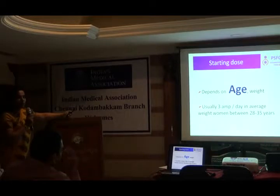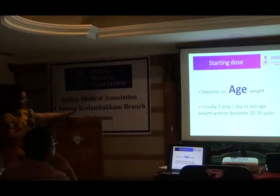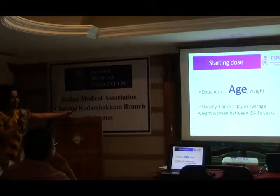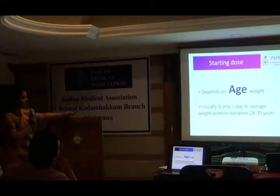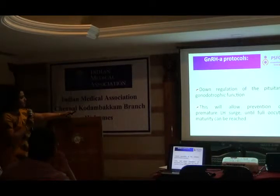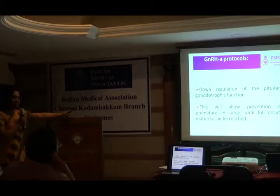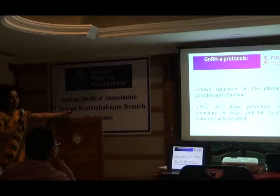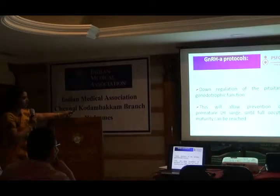The starting dose — how much gonadotropin to give — depends upon the age. Age is a very important factor in poor responders. The weight of the patient also matters. Usually we need 3 ampules subcutaneous for an average-weight woman of about 60 kg. The key is always using the GnRH gonadal axis and how we play with it — that gives us how the gonadotropin works.